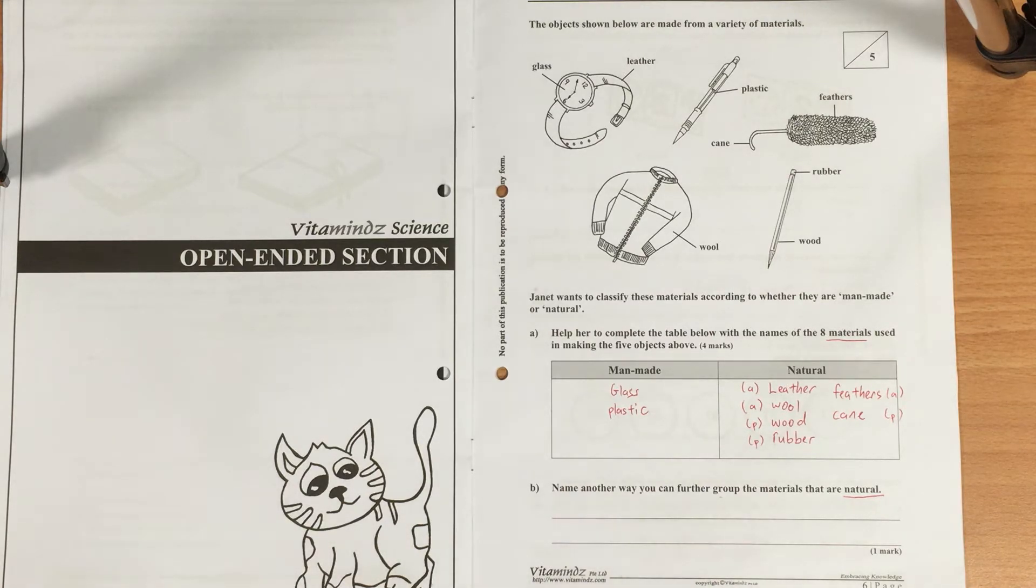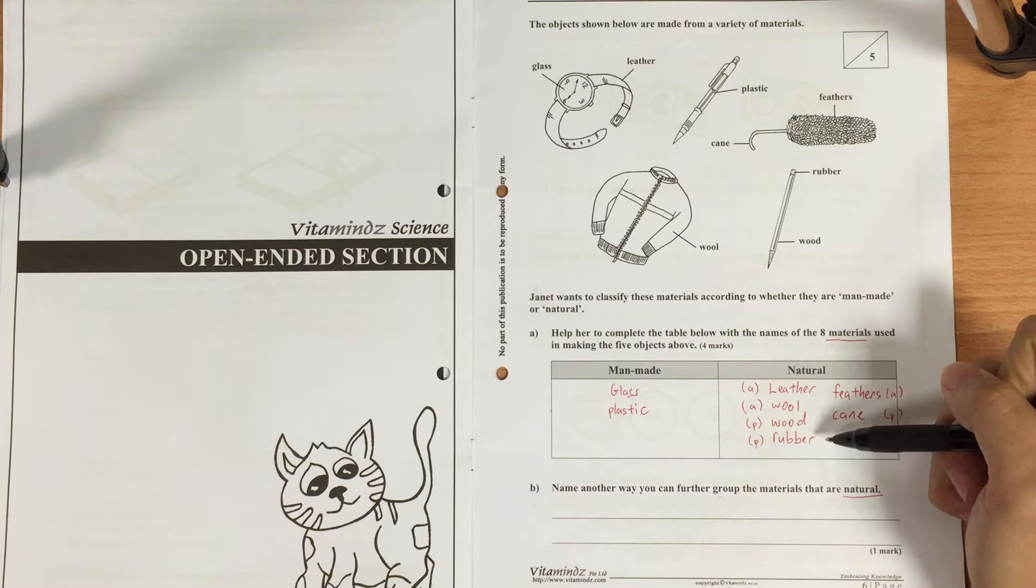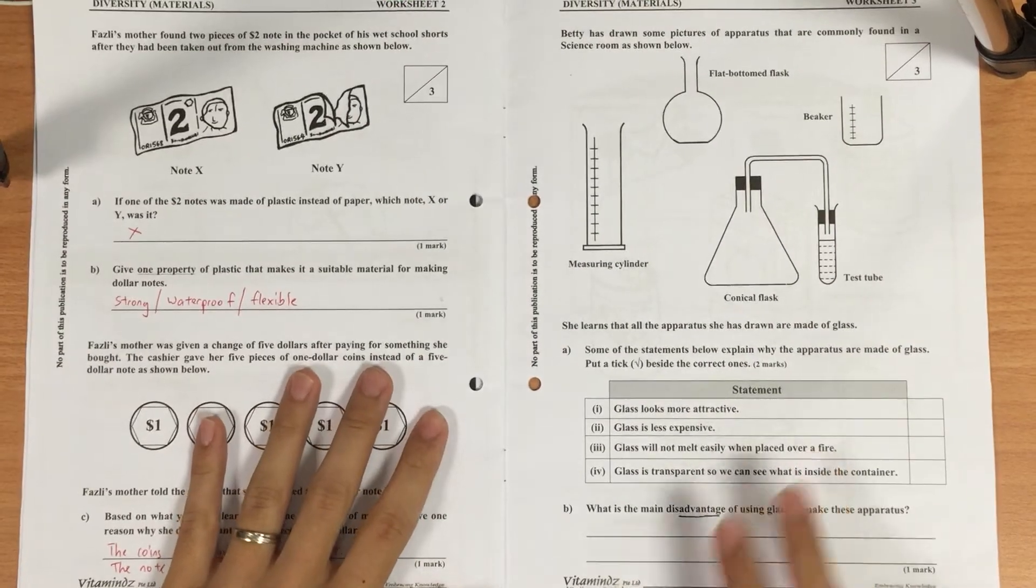For example, we get wool from animals, we get it from sheep. Whereas for wood, of course we get it from trees. Rubber we can get from the rubber tree as well.